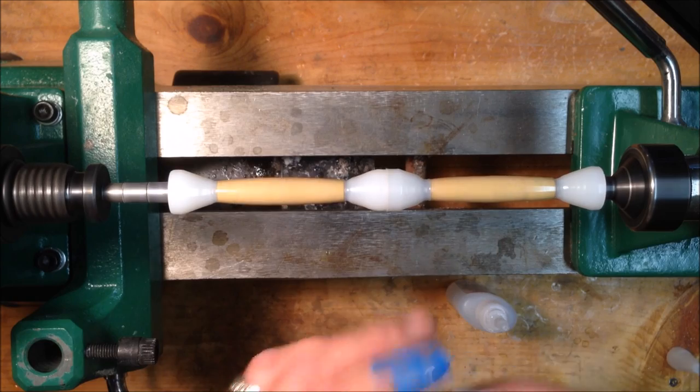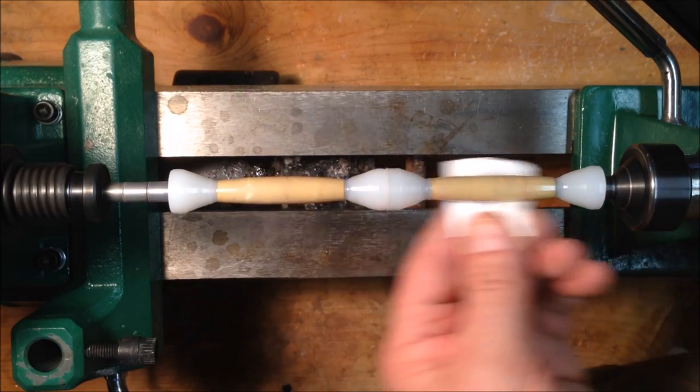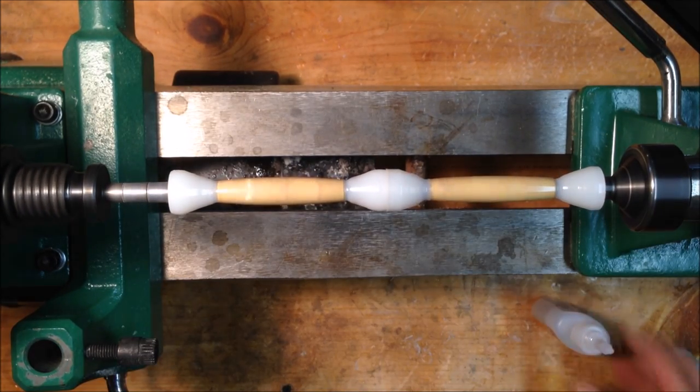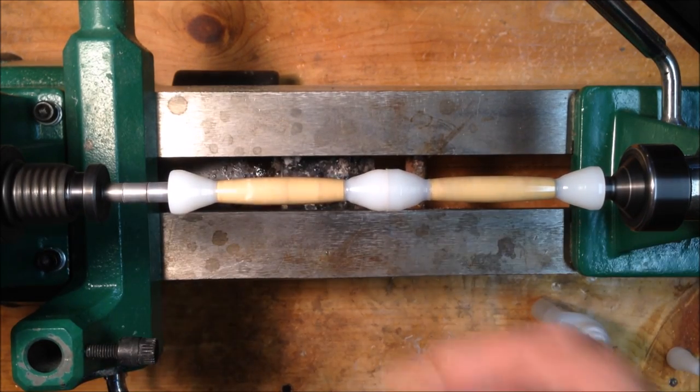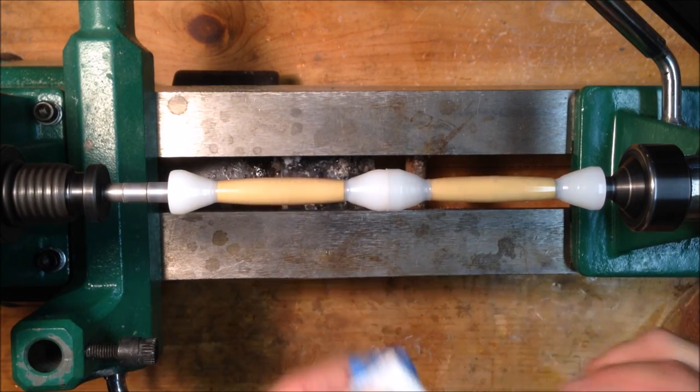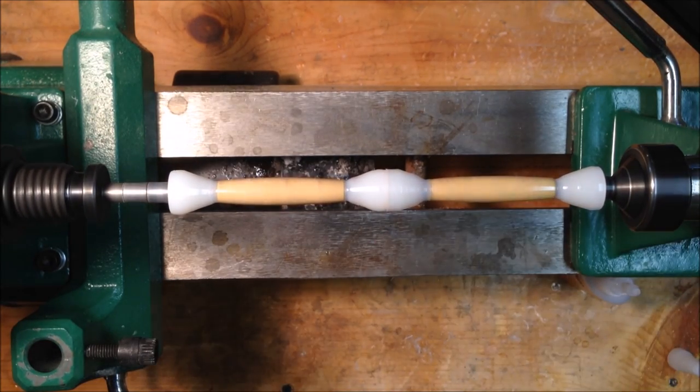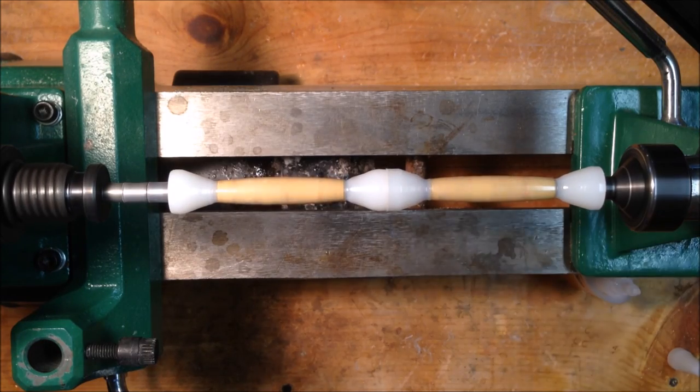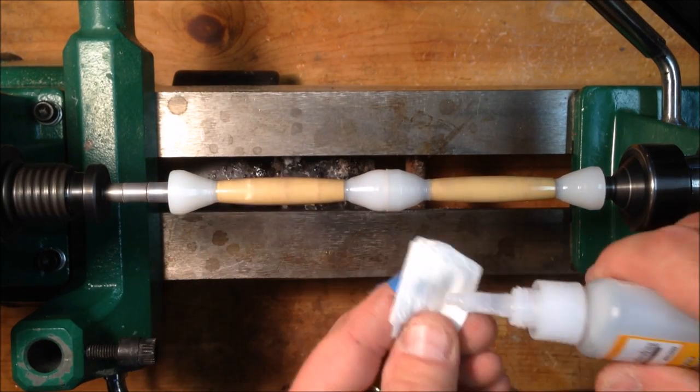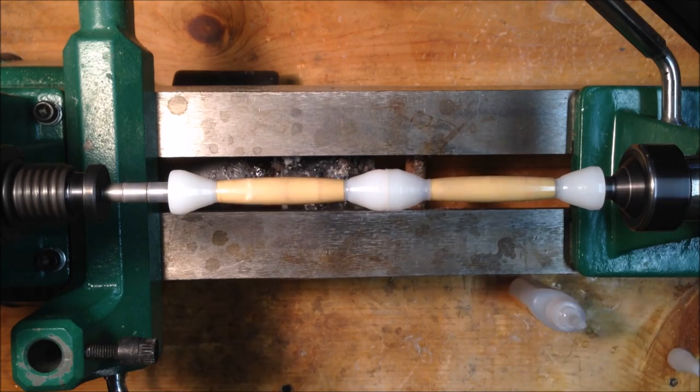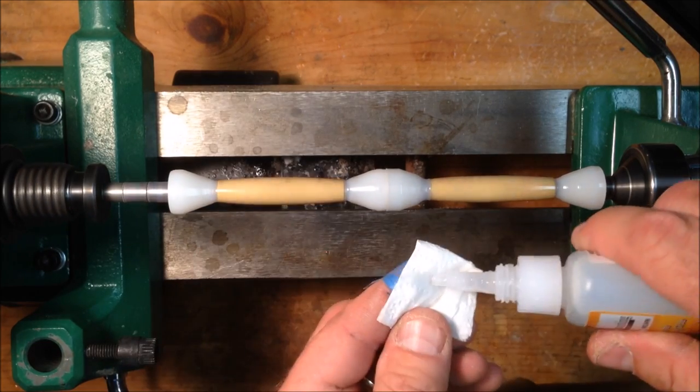I did the first coat by drooling the CA on, and now I'm just going to apply several coats by just applying it to a towel and then rubbing it on. This will give a really nice, beautiful surface appearance. Doing it this way, the CA glue dries very fast, so I can apply the coats almost immediately. I don't know, that's about three, maybe four. We'll go two more coats.